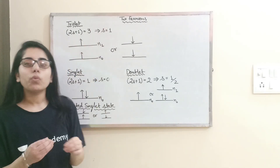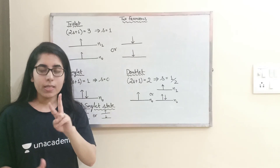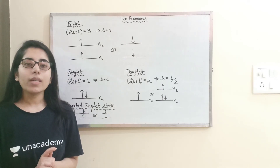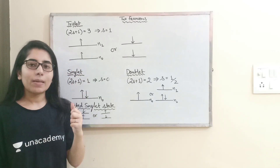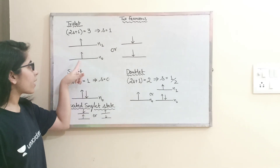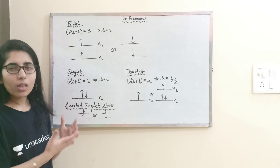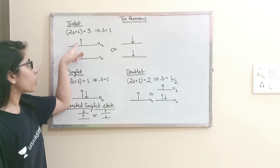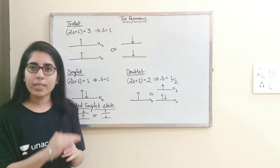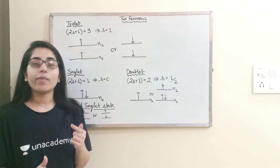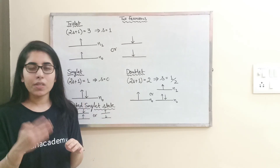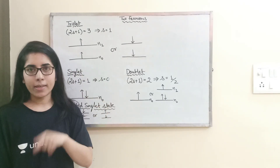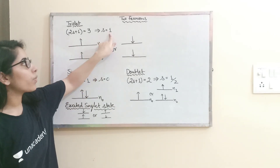For the triplet state, spin S=1. The possible arrangements: either both fermions can be in the up-spin state. Since these are fermions, we can't keep two fermions with the same spin in one particular state, so they must be in different states. Total spin for this system will be 1 — half plus half equals 1. Or both fermions can be in the down-spin state; in either arrangement the overall spin of the system remains 1.